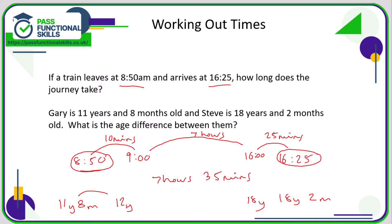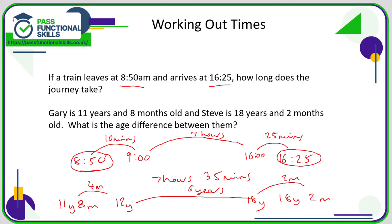What is the gap between 11 years 8 months and 12 years? Remember there are 12 months in a year, not 10, so that is a gap of 4 months. And 18 years to 18 years 2 months — that's a gap of 2 months. The gap between 12 years and 18 years is 6 years. So the total gap between 11y 8m and 18y 2m is 4 months plus 2 months, which is 6 months, and 6 years — so that is 6 years and 6 months.